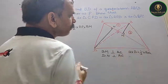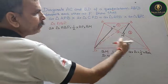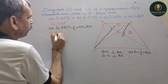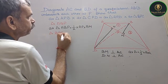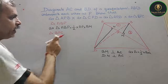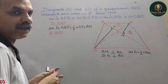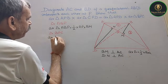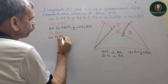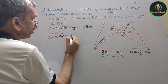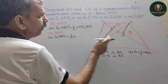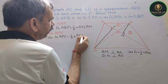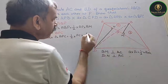The second triangle is BPC. Area of triangle BPC is equal to half into base PC into height BM — same height BM applies here as well. So area of triangle BPC = half × PC × BM.